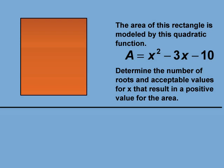Let's start with an example. The area of this rectangle is modeled by this quadratic function, A equals x squared minus 3x minus 10. Determine the number of roots and acceptable values for x that result in a positive value for the area.